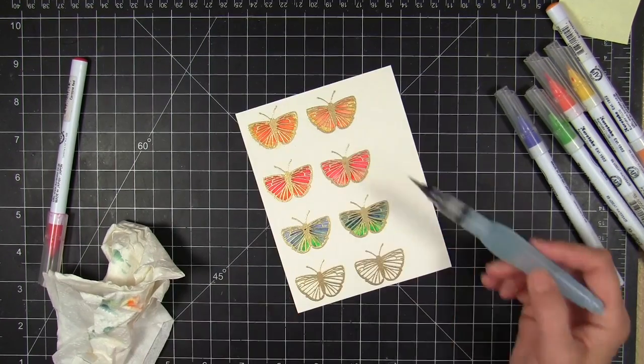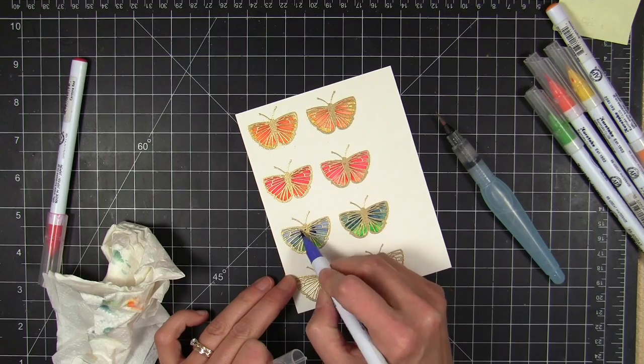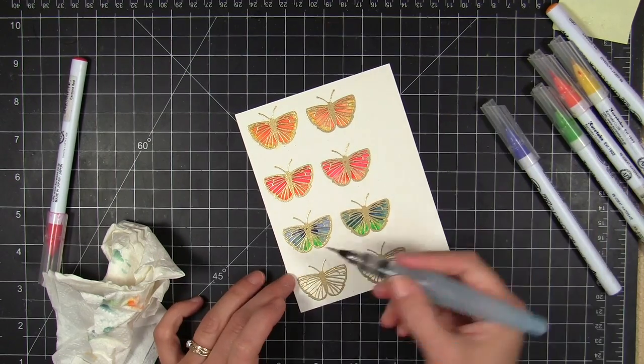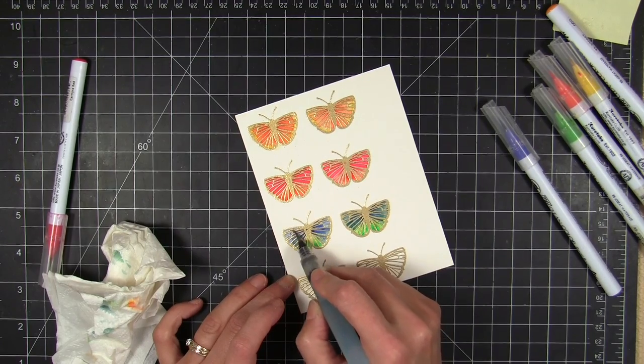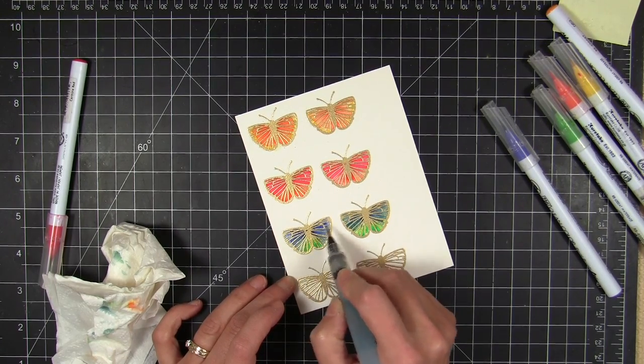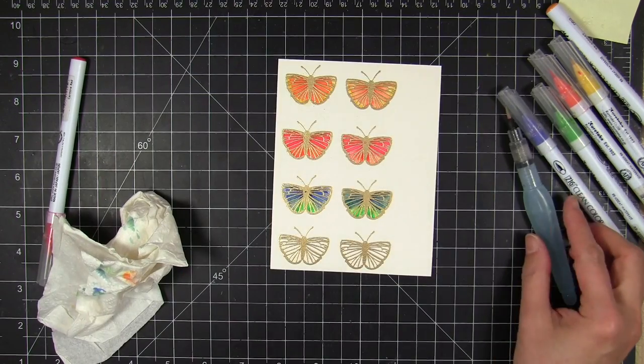And there's a matching die for this butterfly in the Up the Happy die set and I'm just gonna die cut all of these butterflies out. I didn't know how many I would need for the card I was creating. And as you can see here, I'm coming back in and adding a little bit more blue.